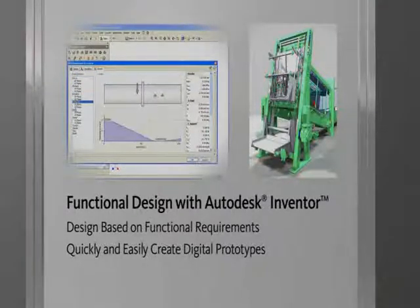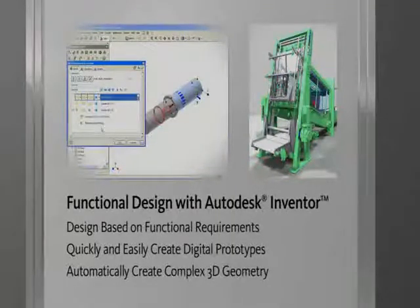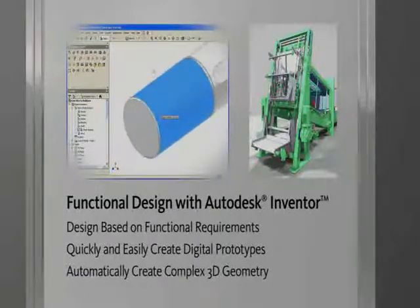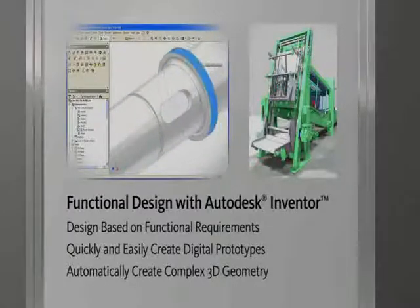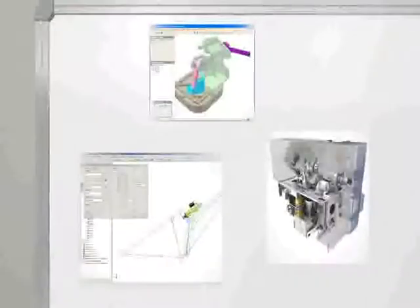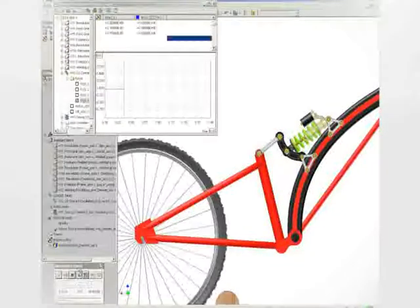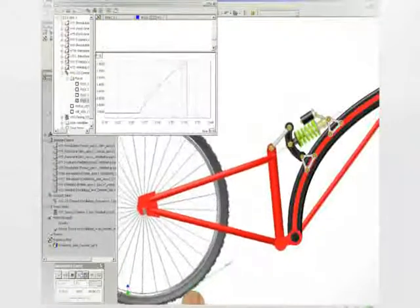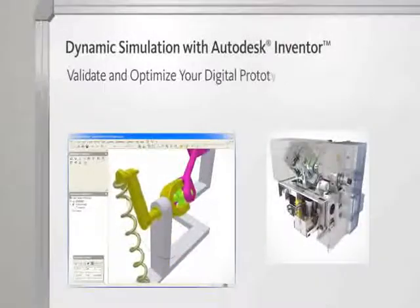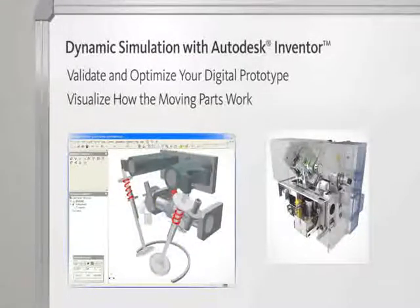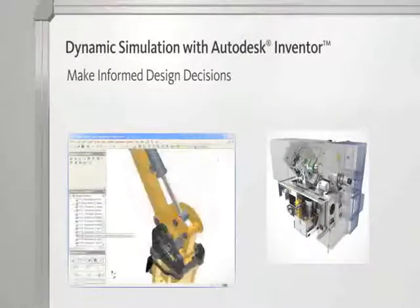For frequently used mechanical components, Inventor generates 3D geometry automatically from design parameters using design accelerators. Engineers can create complex designs without spending time creating the geometry. Within Inventor, it is easy to validate and optimize a digital prototype by simulating the operation of mechanisms and motorized assemblies. Autodesk Inventor provides easy-to-understand visualizations that reveal how the moving parts of a design will work long before building a costly physical prototype, and allows designers to evaluate different solutions to motion problems.